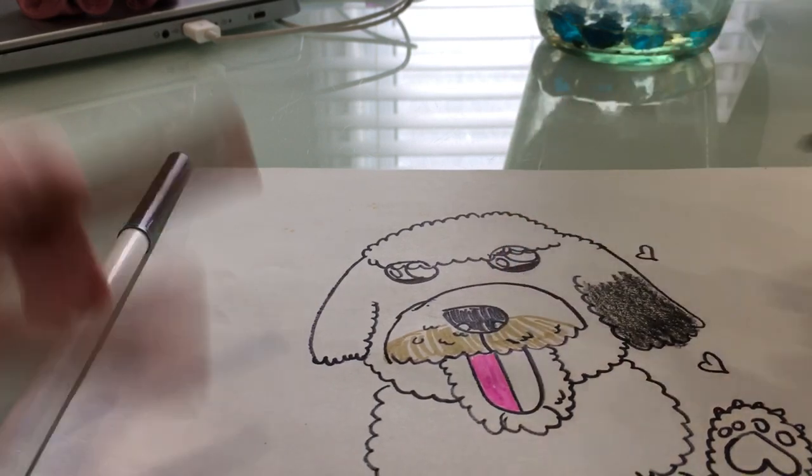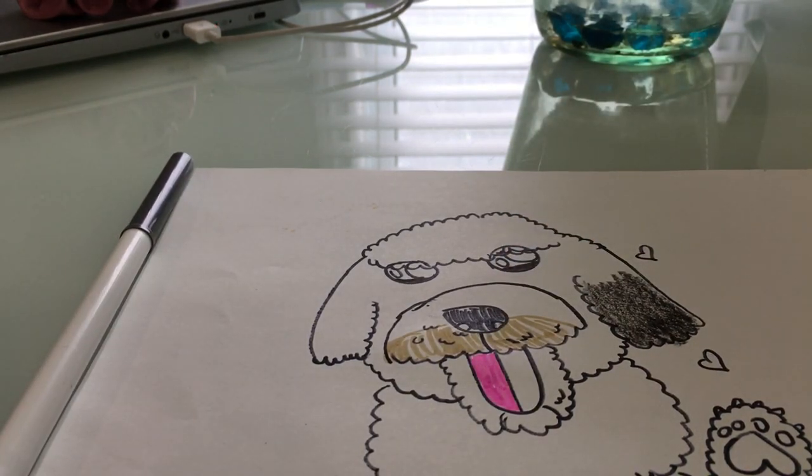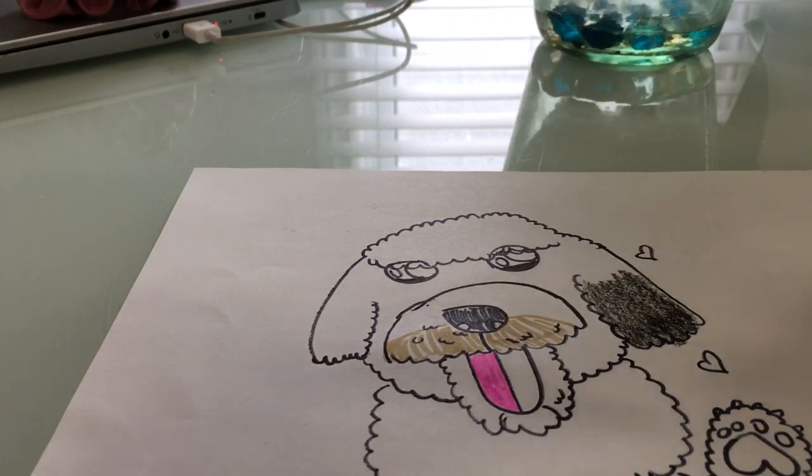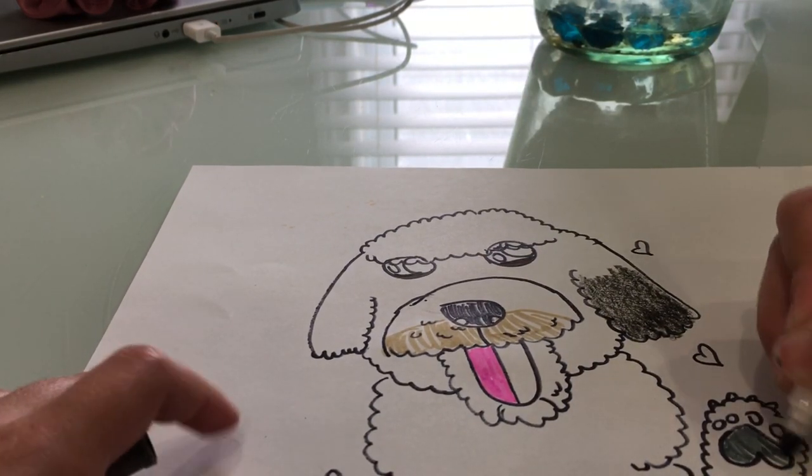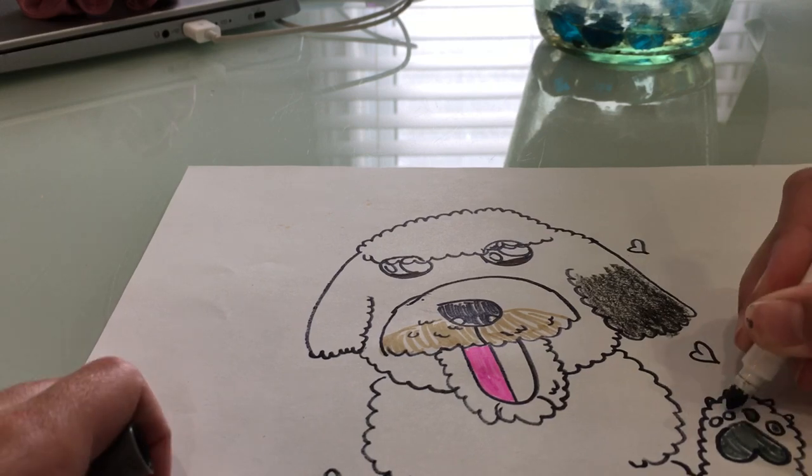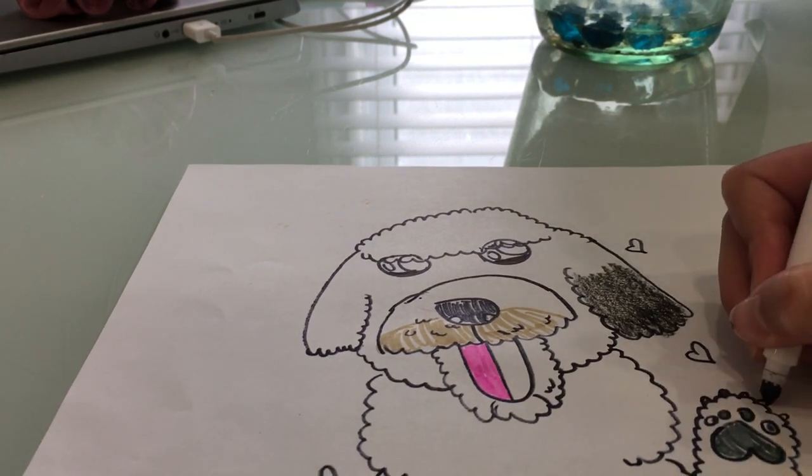This marker smells bad. And the gray, I'm going to use it to color his little adorable paw print. I was going to make it pink, but then I decided to make gray because that's the actual color. And the claws. So there is how you draw Luca.